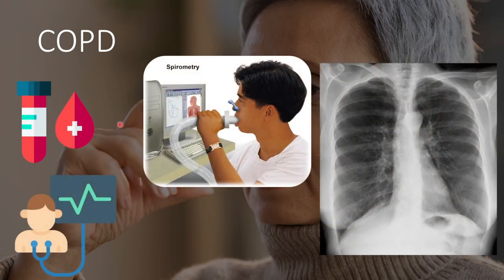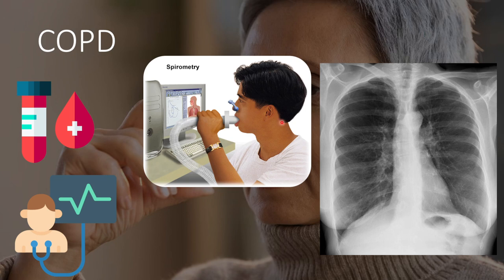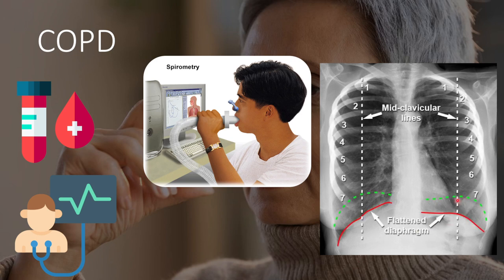Investigations include blood tests that may show raised haemoglobin indicating secondary polycythemia. ABGs may show respiratory failure. ECG will show right heart hypertrophy due to increased resistance of blood through the lungs and cor pulmonale. Spirometry shows the diagnostic FEV1 to FVC ratio less than 0.7, which is not reversible with bronchodilators. Chest X-ray shows hyperinflation and a flat diaphragm — we can visualise the flattened diaphragm where it has moved downward due to hyperinflation.